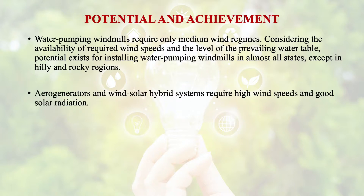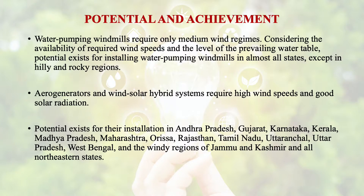Aerogenerators and wind-solar hybrid systems require high wind speeds and good solar radiation. So the potential exists for their installation in Andhra Pradesh, Gujarat, Karnataka, Kerala, Madhya Pradesh, Maharashtra, Odisha, Rajasthan, Tamil Nadu, Uttaranchal, Uttar Pradesh, West Bengal, and some windy regions of Jammu & Kashmir and all north-eastern states.